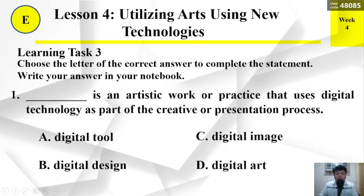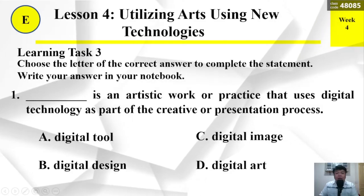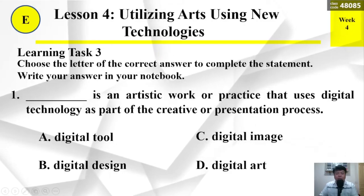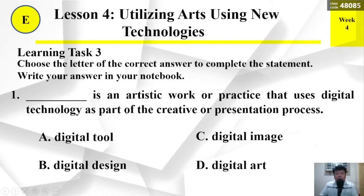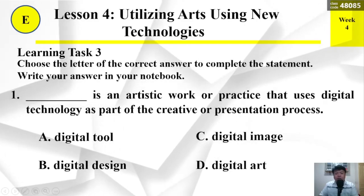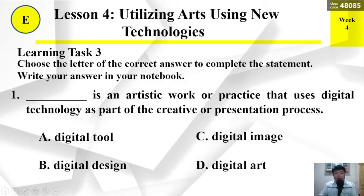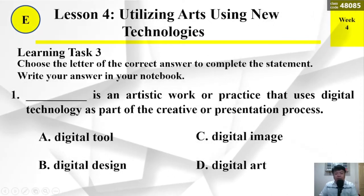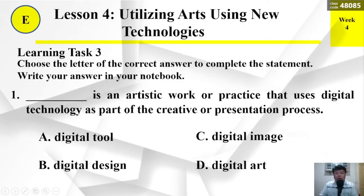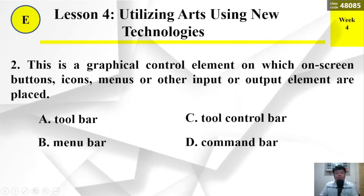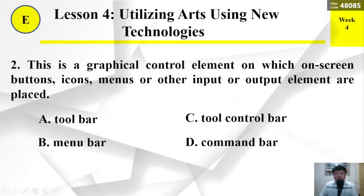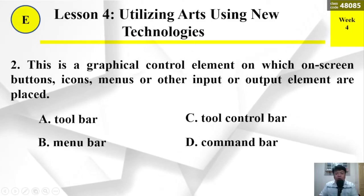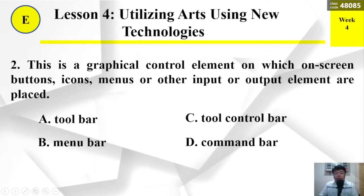Learning Task Number 3: Choose the letter of the correct answer to complete the statement. Write your answer in your notebook. Number 1: Blank is an artistic work or practice that uses digital technology as part of the creative or presentation process. A. Digital tool, B. Digital tool, C. Digital design, or D. Digital art. Number 2: This is a graphical control element on which on-screen buttons, icons, menus, or other input or output elements are placed.